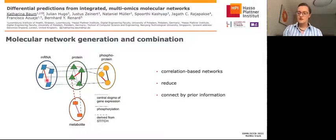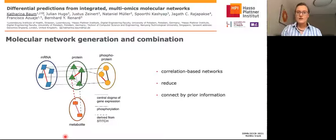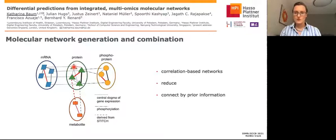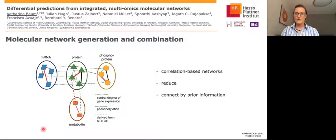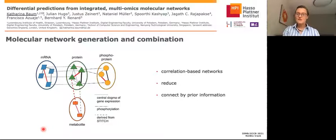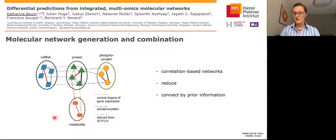After doing this to all layers — for example mRNA, protein, phosphoprotein, and lipid layers — we connect the different layers. For this, we use prior information. The dogma of molecular gene expression is that given an mRNA, it's translated to a certain protein, so we would connect the two with an edge of weight 1. Similarly, we would connect a protein to its phosphorylated form with an edge of weight 1. Including metabolite data is more difficult, and for this we use database information such as from STITCH. STITCH gives exactly the information on which metabolites interact with which protein, and we simply leverage that information.